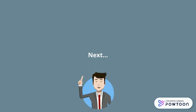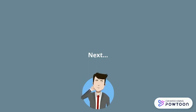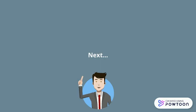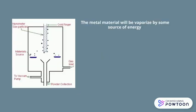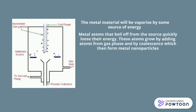Next, we will see how the nanoparticles are being produced by gas-based method. In the beginning, the metal material will be vaporized by some source of energy. Metal atoms that boil up from the source quickly lose their energy. These atoms grow by adding atoms from the gas phase and by coalescence, which then form the metal nanoparticles.